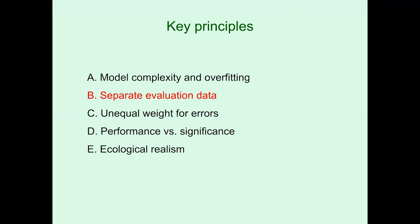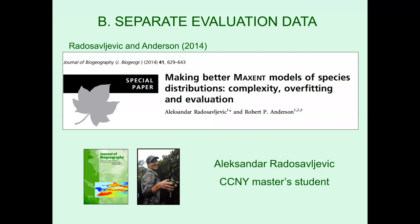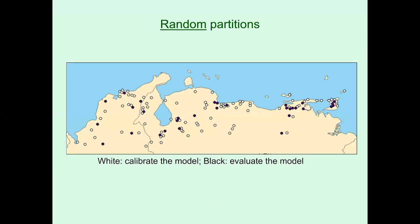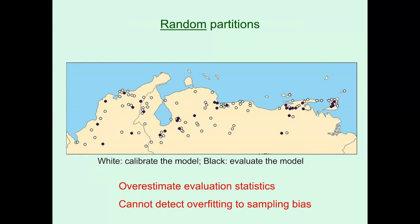Let's move to the idea of separate evaluation data. This is a paper by Alex Radisavlovich, a master's student in my lab. It used to be that we often made random partitions of our data. Over the past 20-odd years, many of us have realized that many things we used to do were really not very good, and this is one of them. With a random partition — a fourth of localities withheld in black for evaluation, the rest in white used to make the model — random partitions generally overestimate evaluation statistics and cannot detect overfitting to sampling bias, which is preserved in both datasets.